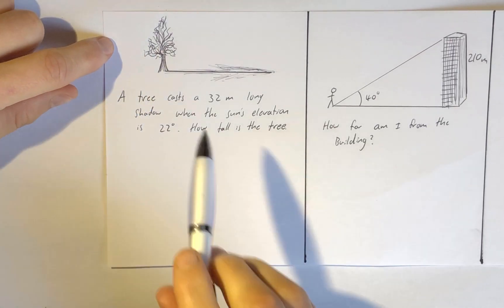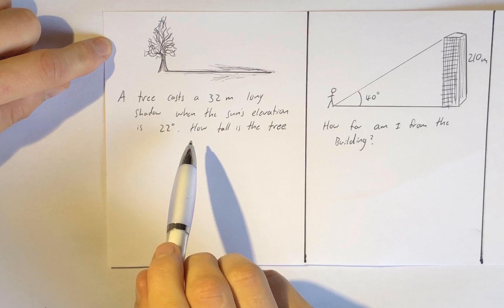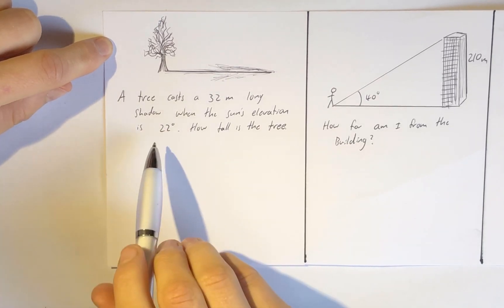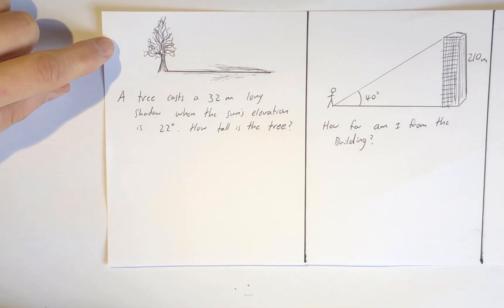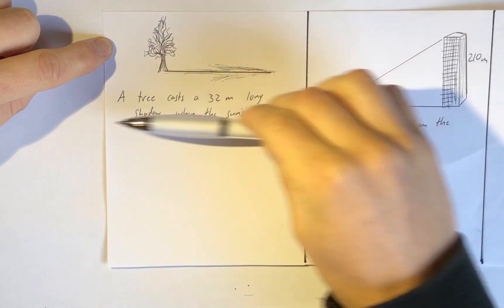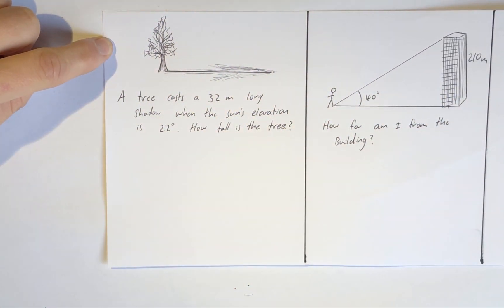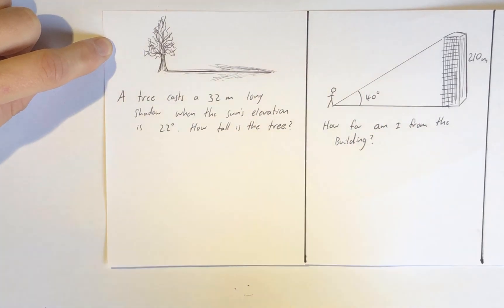A tree casts a 32 meter long shadow when the Sun's elevation is 22 degrees. How tall is the tree? So elevation means the angle that the Sun is at compared to the ground. The ground is horizontal, and it is for the scale of this problem.